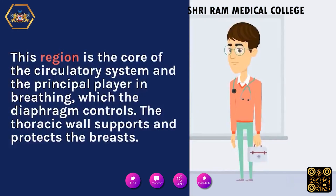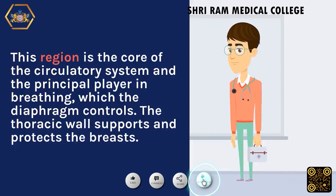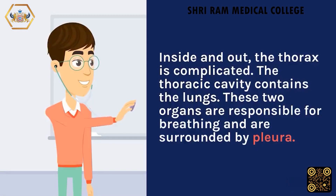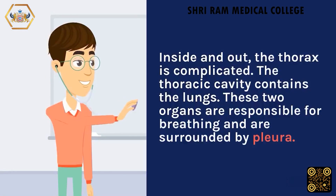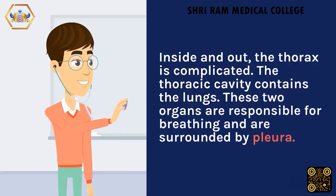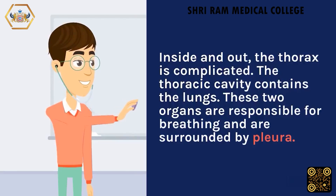This region is the core of the circulatory system and the principal player in breathing, which the diaphragm controls. The thoracic wall supports and protects the breasts. Inside and out, the thorax is complicated. The thoracic cavity contains the lungs, which are responsible for breathing and are surrounded by the thorax.